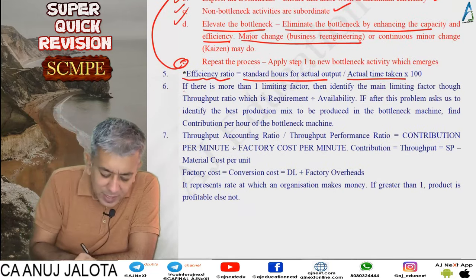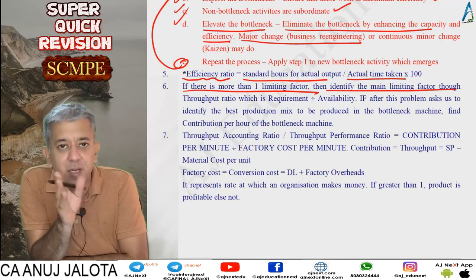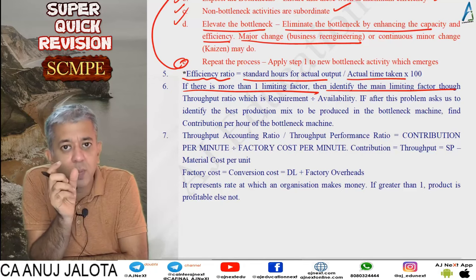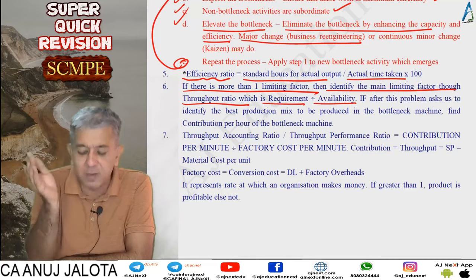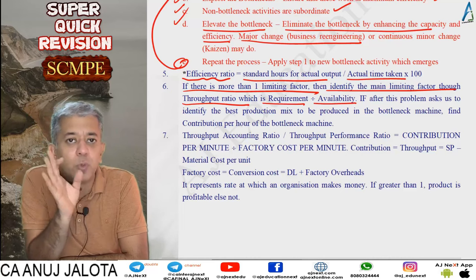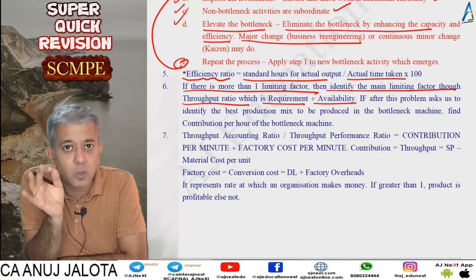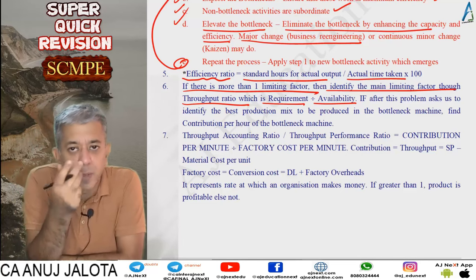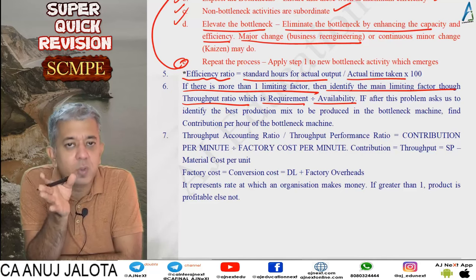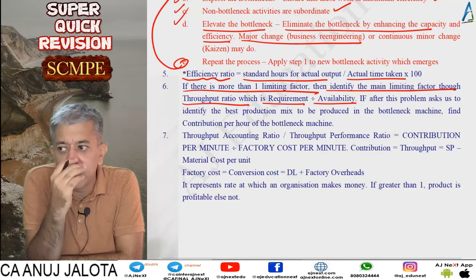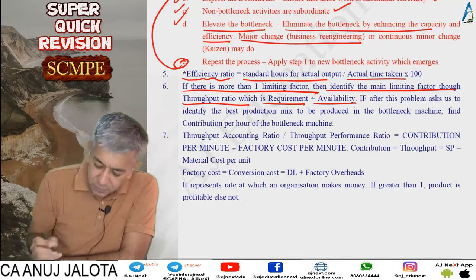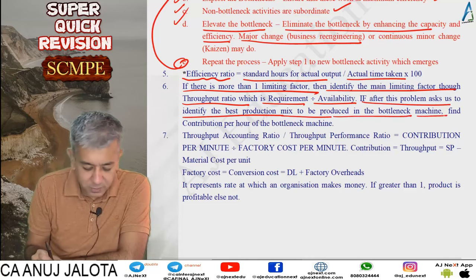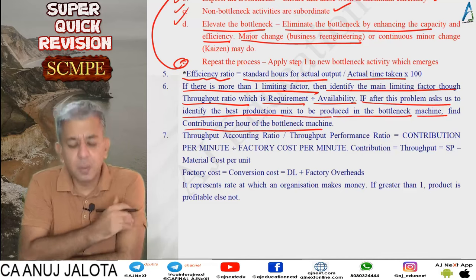If there is more than one bottleneck machine, identify the main limiting factor. You can find the main bottleneck by calculating throughput ratio: requirement divided by availability. Whichever machine has the highest throughput ratio is your main limiting factor. If the question asks to identify the best product mix to be produced in the bottleneck machine, find the contribution per hour of the bottleneck machine — same approach as limiting factor chapter.